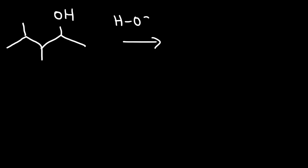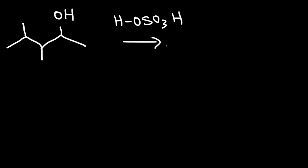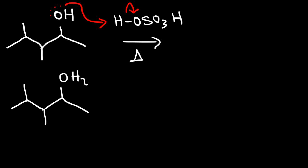Now let's work out another example. Here we have a secondary alcohol and we're going to react it with sulfuric acid (H2SO4) and heat the solution. Draw the major E1 product and write the mechanism. When we had an alkyl halide, the first thing we did was kick out the leaving group to get the carbocation. However, the OH group is a bad leaving group because hydroxide is a strong base, but water is a weak base — water is a better leaving group than hydroxide. So the first step is to protonate the alcohol, turning it into a good leaving group. Once it leaves, we get a secondary carbocation.